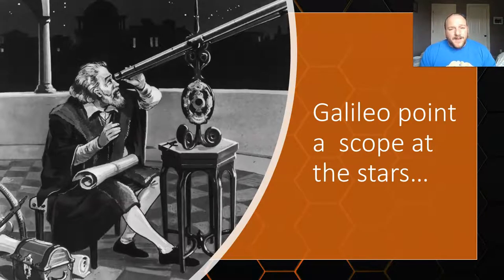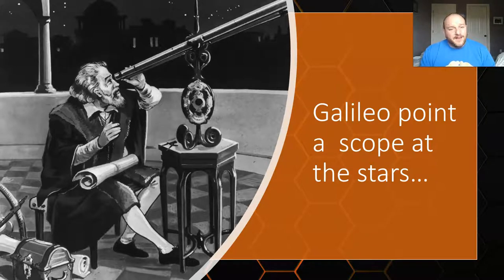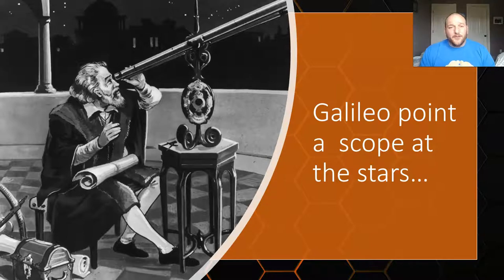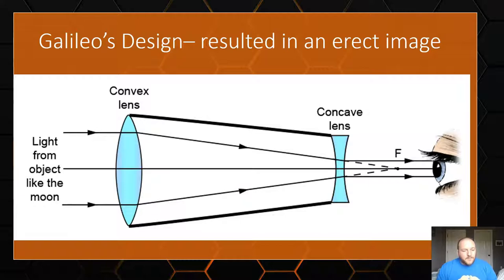The first telescopes were developed by a contemporary of Galileo, though Galileo gets all the credit — maybe through good marketing. He convinced people to fund his telescopes by talking about their military purpose. From a port town like Venice, you could shine a scope on the horizon and spot enemy ships earlier. So he got funded, built telescopes, and of course used those scopes to observe the sky. He was the first person really credited for using telescopes, though he wasn't the first to design them.